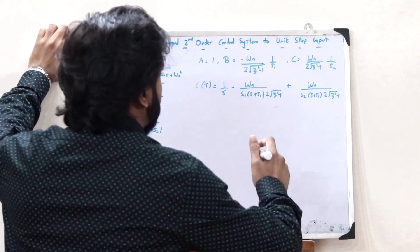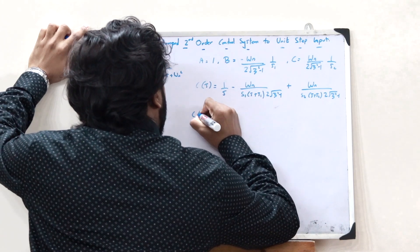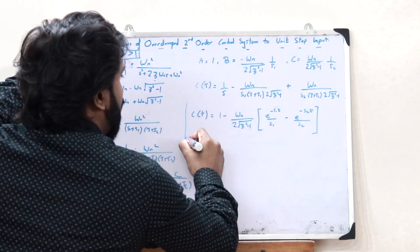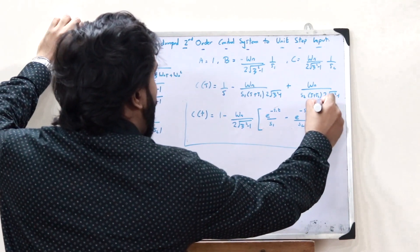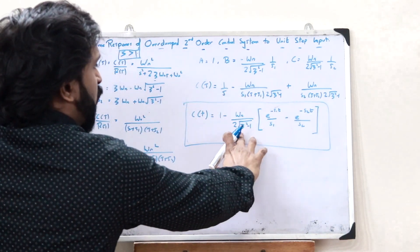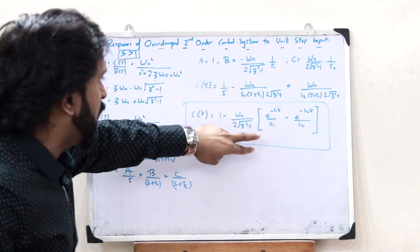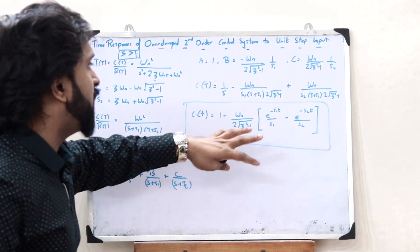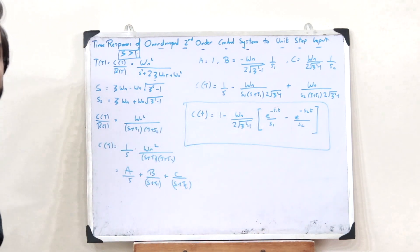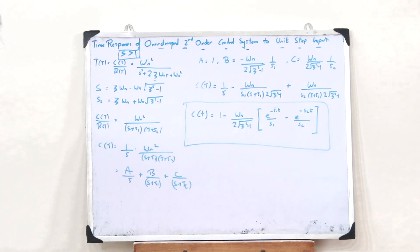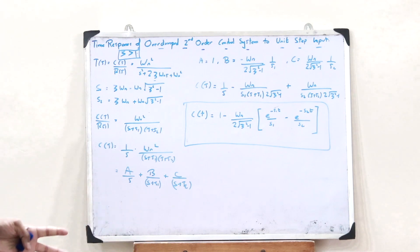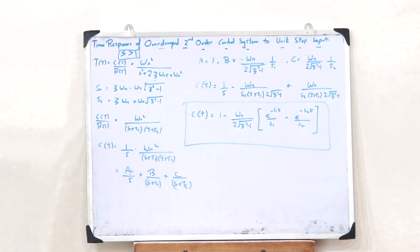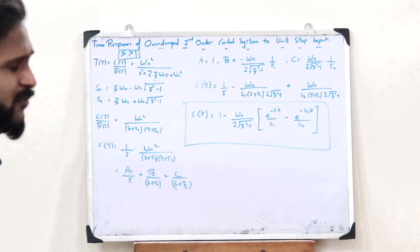Upon taking the inverse Laplace transform, we get c(t) = 1 minus [omega_N divided by 2 root of (zeta squared minus 1)] times [e raised to minus S1·t divided by S1 minus e raised to minus S2·t divided by S2]. This is the time response of an over-damped second-order control system to a unit step input.